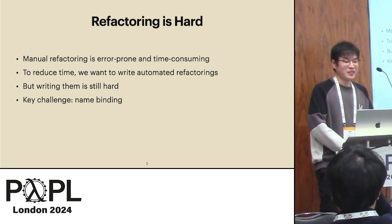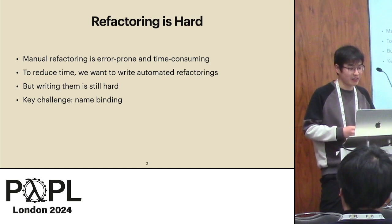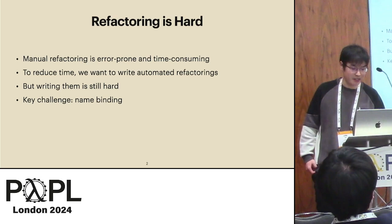Refactoring is a hard problem. Manual refactoring is error-prone and time-consuming. To reduce time, we want to write automated refactoring, but writing them is still hard. One key challenge is name-binding.